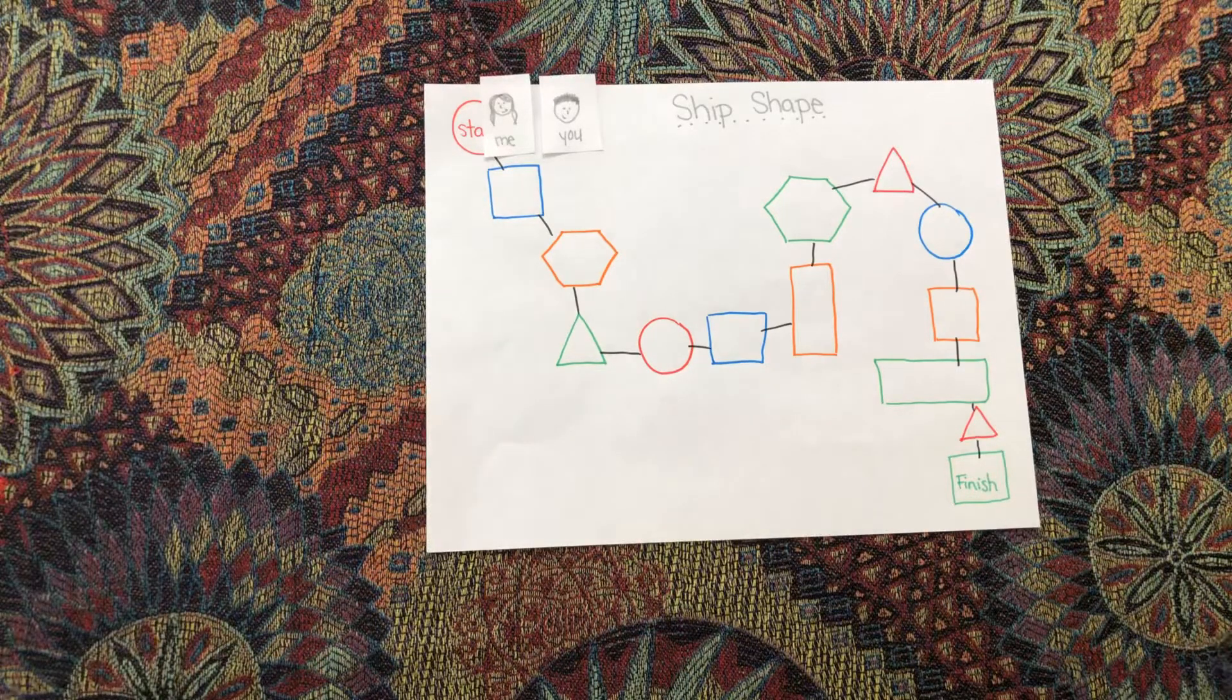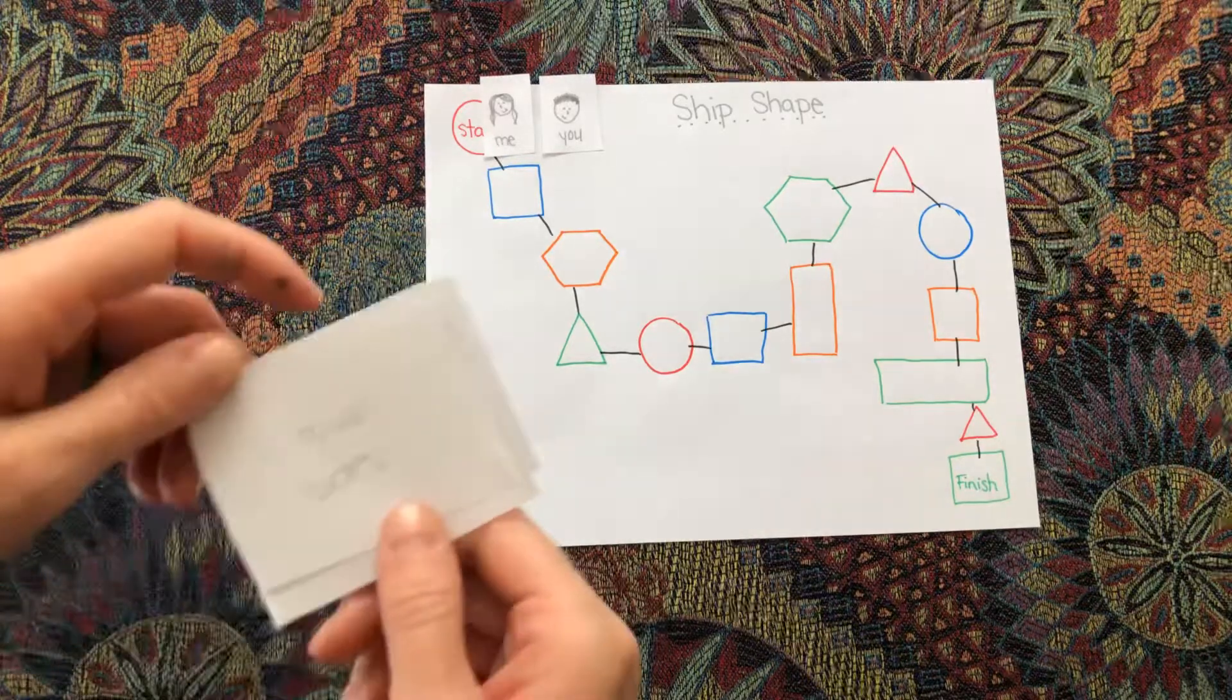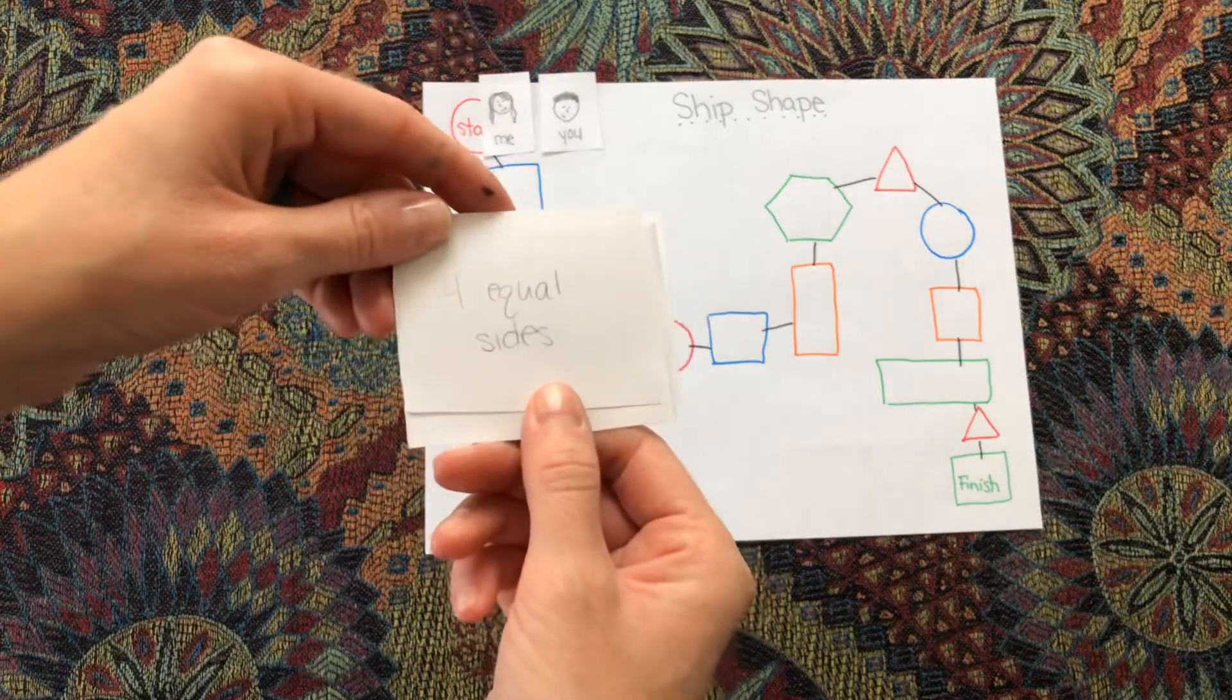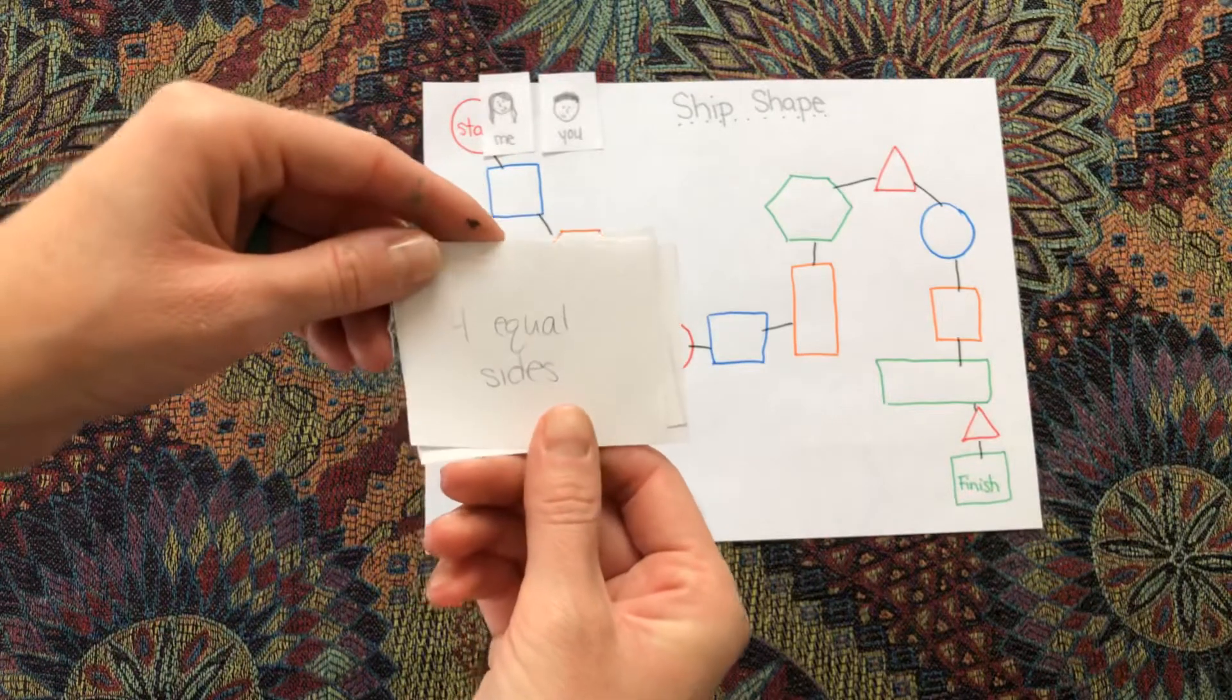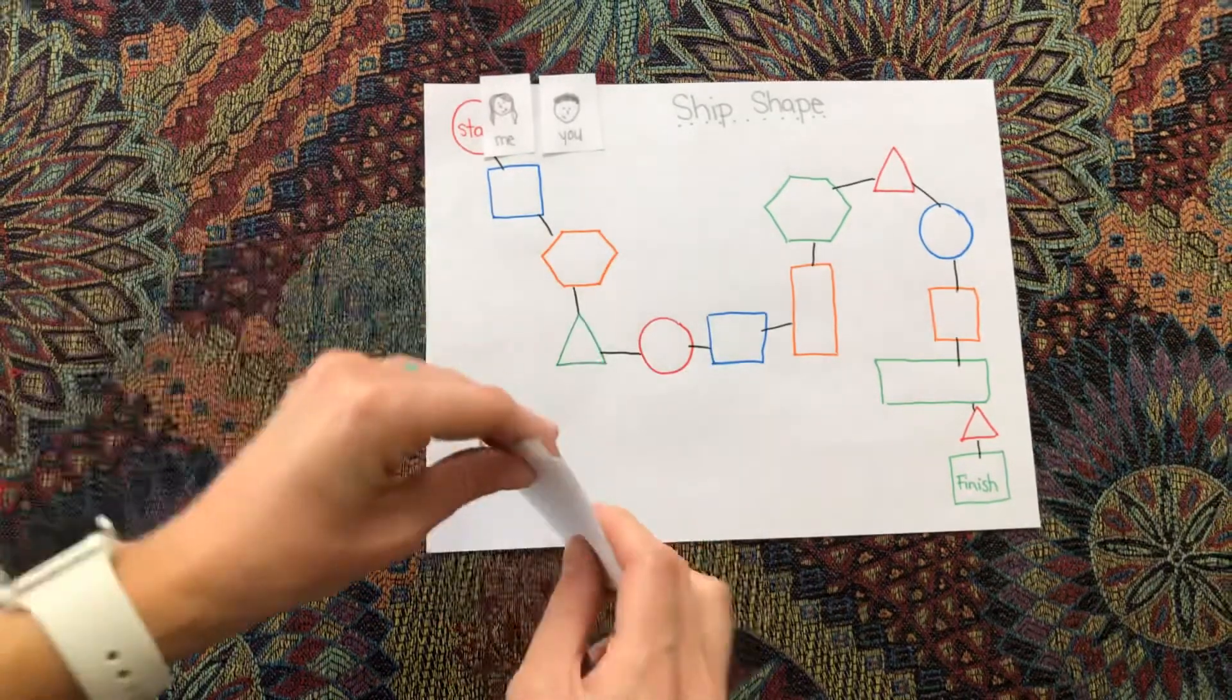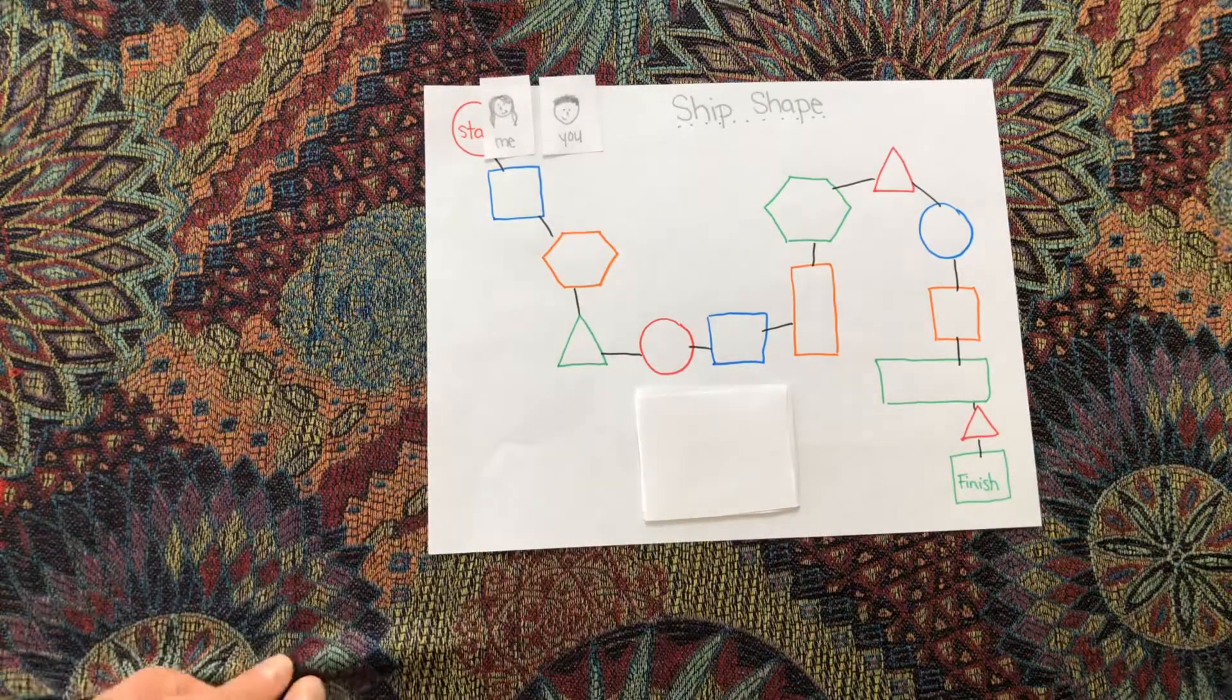Another thing you need for your game are cards that you draw and it tells you what to do. Now, I made mine tell a little bit about each shape. So let's see. If I have my cards on my game like that. There we go. What else do I need for my game?